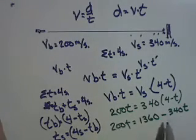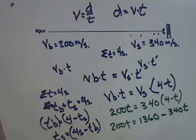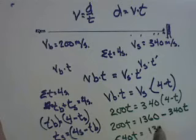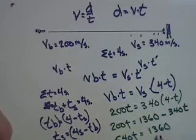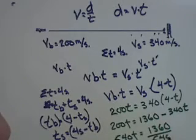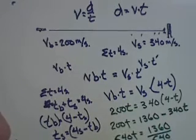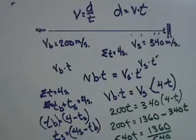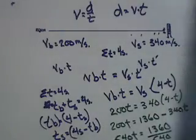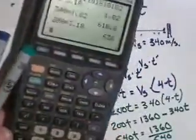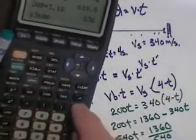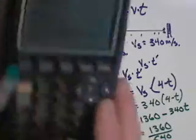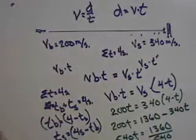Combine the t's by adding 340 to both sides. I get 540t equals 1360. If I divide both sides by 540, I get t equal to—let's get the calculator out—1360 divided by 540, which is 2.51 seconds.